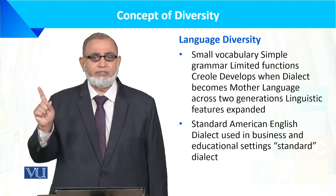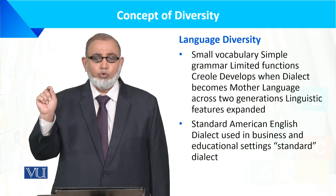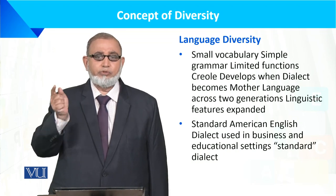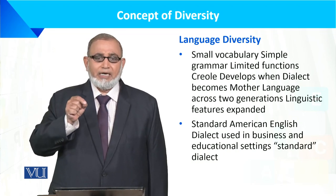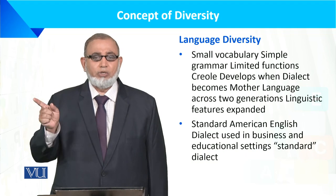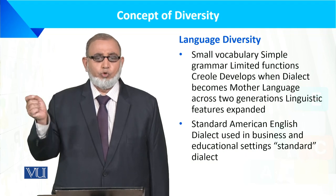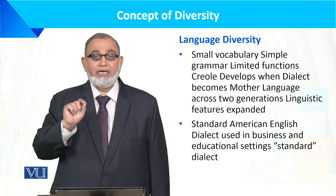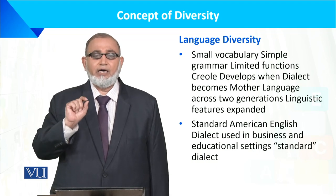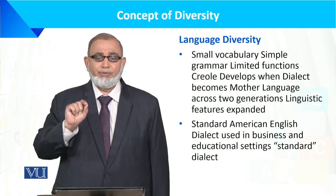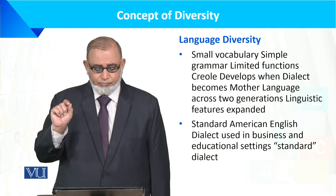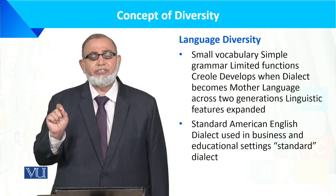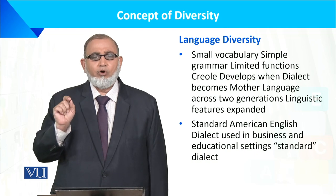جب کوئی language دو generations تک cross کر لے، یعنی ایک language کا dialect دو generations تک چلا جائے تو وہ ایک زبان بن جاتی ہے اور اس میں permanence آ جاتی ہے۔ یہ across generations extend ہوتی ہیں۔